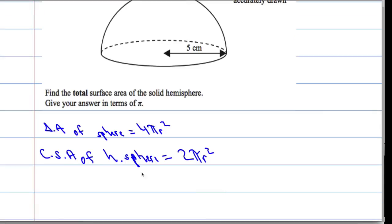So, the total surface area of a hemisphere will be, we've got the curved surface area, which is 2 pi r squared, but also we've got this bottom bit here, which is going to be a circle. And the surface area of a circle is pi r squared.